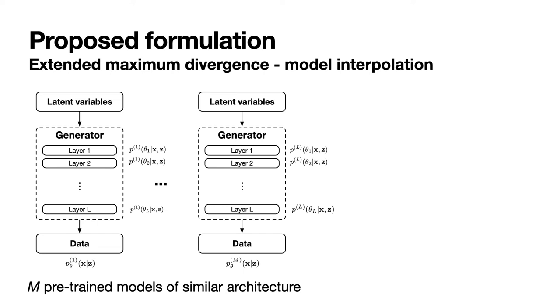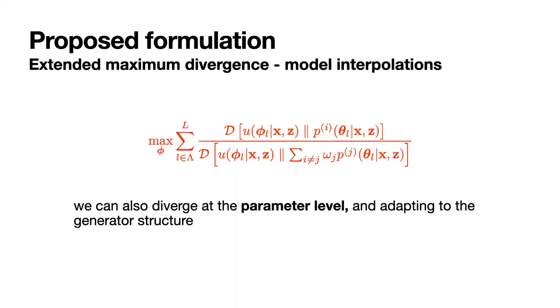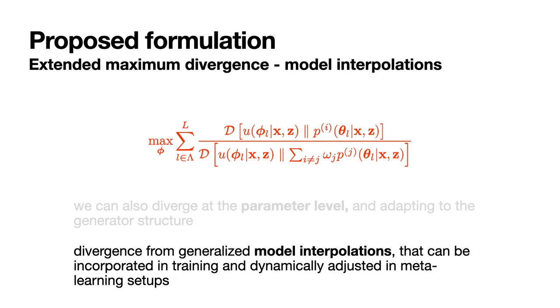Let us consider M generative models with similar architectures constituted of successive neural layers and our target different model. We can then apply the meta-learning maximum divergence objective in the parameter domain, where we diverge from specific layers or specific models in order to control more precisely the desired artifacts. The layers and the models could also be set up by the outer loop, providing greater introspection to the divergent model. This can be seen as diverging from generalized model interpolations and could be of great interest for controlling artifact generation at a higher level.